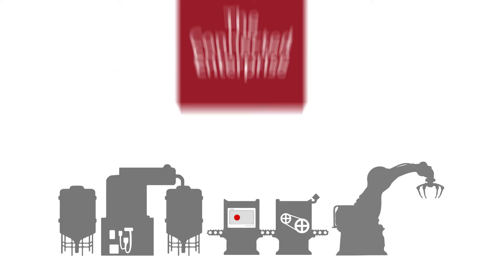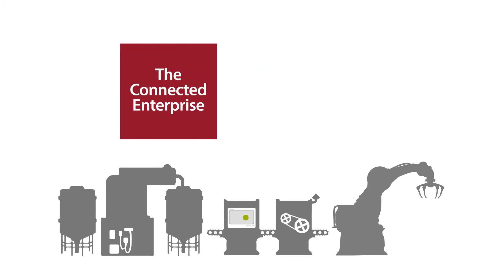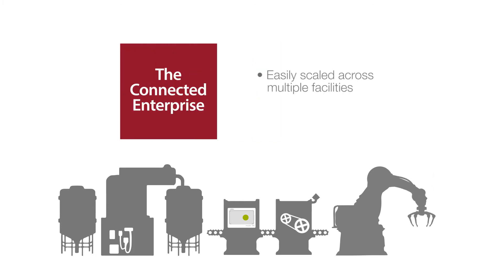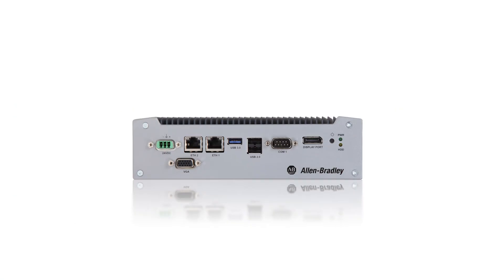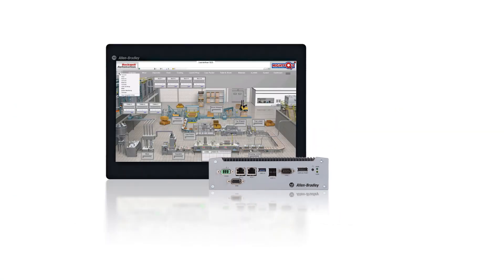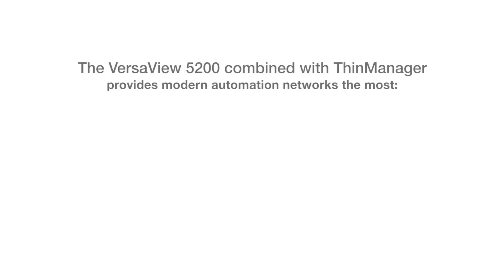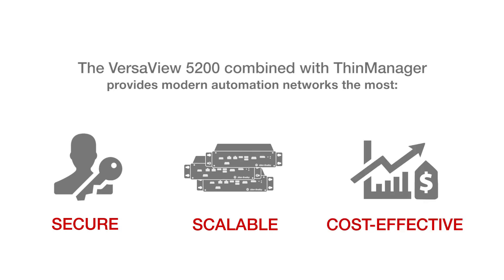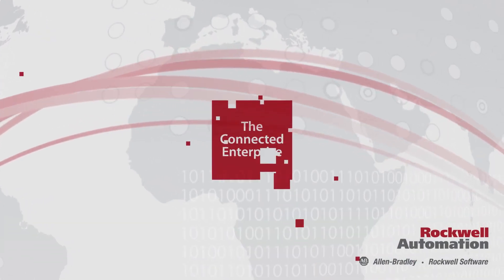The modern connected enterprise begins with foundational technologies that can be easily scaled across multiple facilities and standardized across large corporate infrastructures. The new VersaView 5200 thin clients combined with ThinManager provides modern automation networks with the most secure, scalable, and cost-effective way to bring the connected enterprise to life for your modern manufacturing facilities.